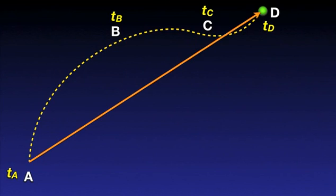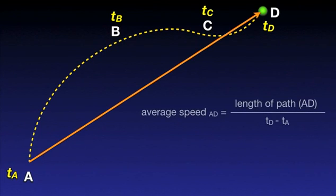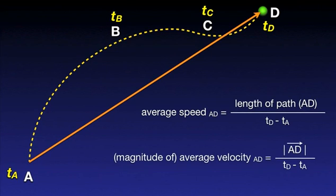In all calculations we take A as the initial position. For the entire motion from A to D, the average speed is the length of the path from A to D divided by the time interval, TD minus TA. The magnitude of the average velocity is the length of the displacement AD divided by the same time interval. The two are obviously different.